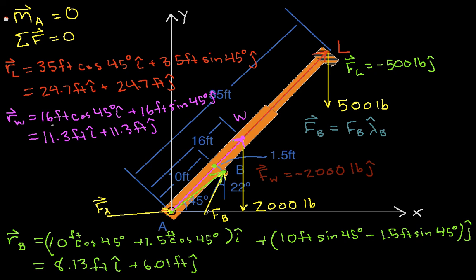Okay, so you can see that this unit, or that this force, has an angle of 22 degrees with the vertical. And so I can say then that lambda-hat B, the amount that I go over in the x-direction, will be sine of 22 degrees i-hat. And then I go up, and I go up by an amount cosine 22 degrees j-hat.